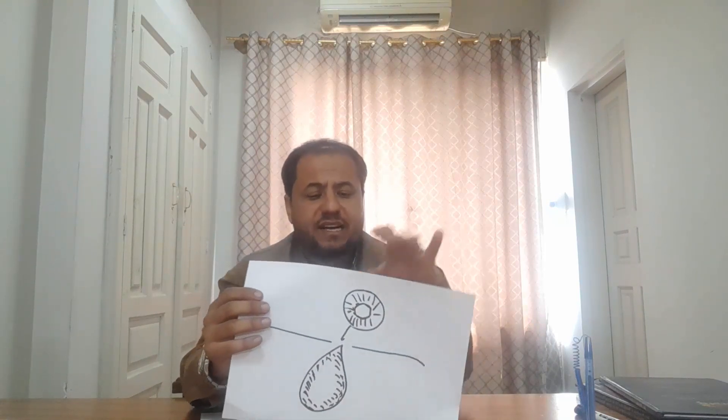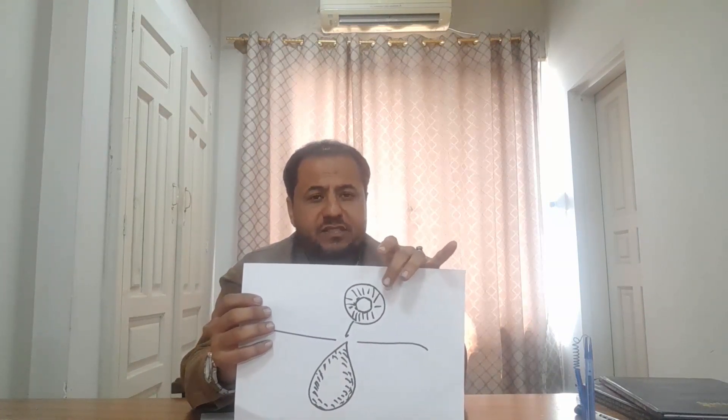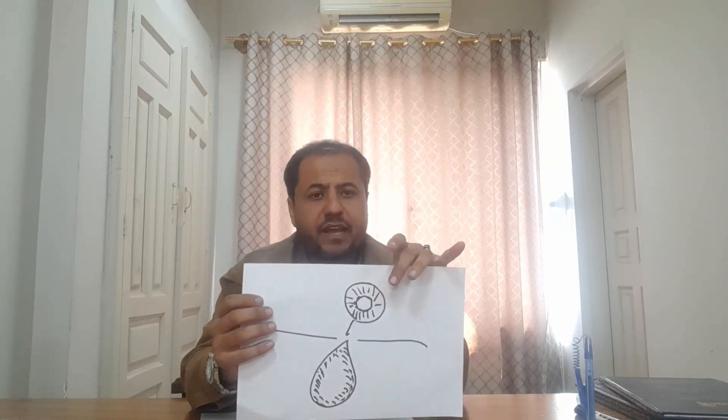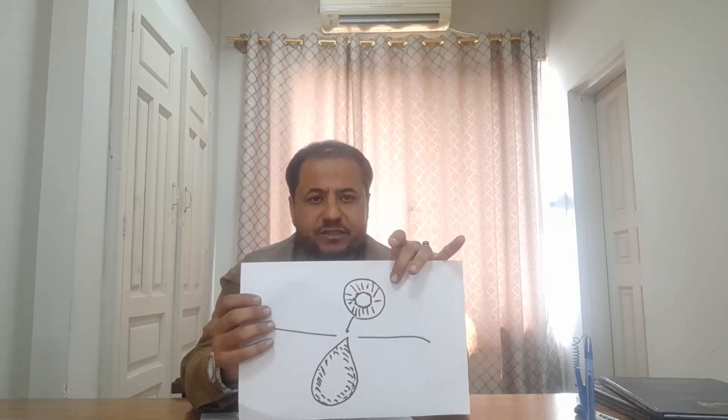We will also discuss the mechanism of dacrocytes — how tear drop cells are formed in certain conditions. First of all, we should know what tear drop cells are. Tear drop cells are also known as dacrocytes. If we look at a normal red blood cell, it has a central pallor area and is a biconcave disc-like structure.